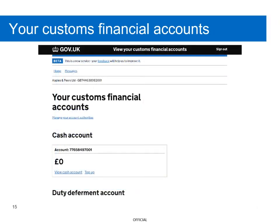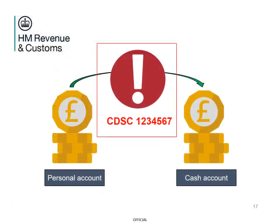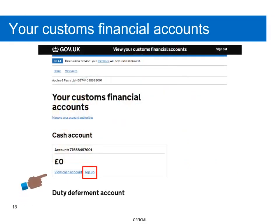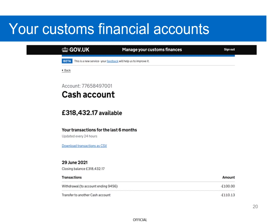When you log in to your Customs Financial Accounts for the first time, you'll be presented with your home screen. You'll be able to see details of your Cash Account including your account number. When paying into any account, you need to use CDSC followed by your account number as the reference number. To find out more information on paying into your Cash Account, select the Top Up option. In your Cash Account, you also have the option to view your Cash Account statements — select View Cash Account. On this screen, you'll see statements of up to 6 months, which is the default number of months displayed. Please note that if you're a first-time user, no statements will appear. If you would like to view statements older than 6 months, you would need to scroll down the page and select the link Request Older Statements.